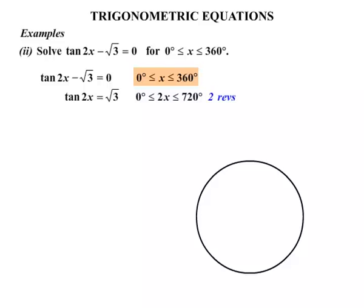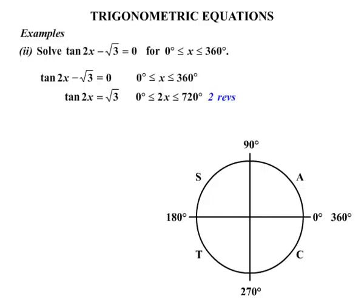In other words, that means we're looking for answers for two revolutions. Now again, let's just concentrate on the 360 though. All stations to central. 0 degrees, 90, 180, 270 and then 360.